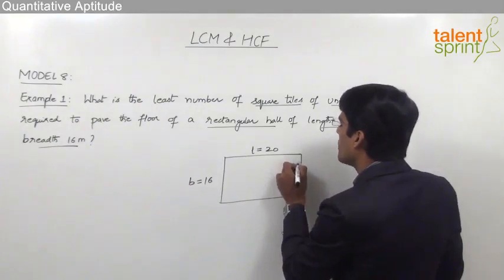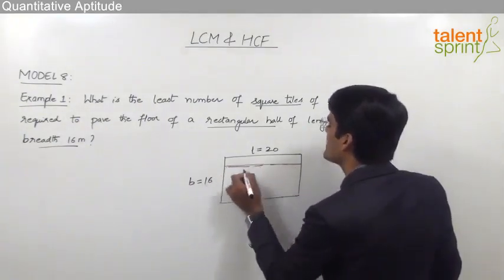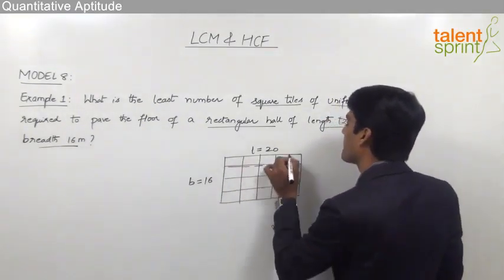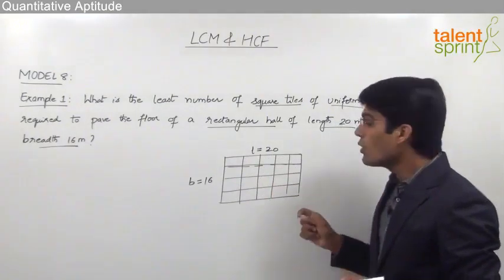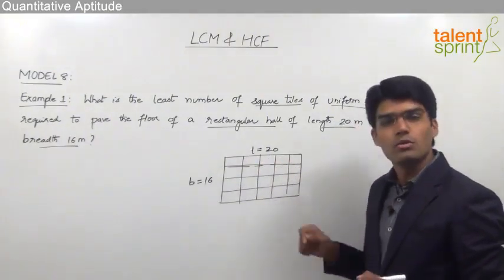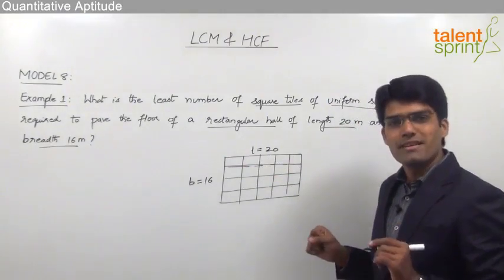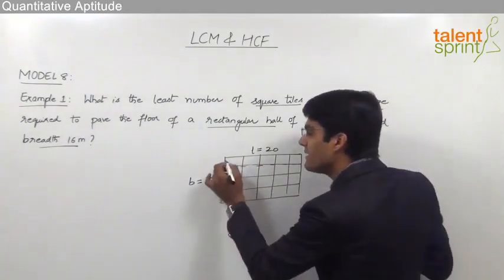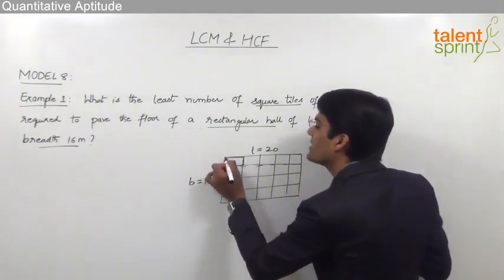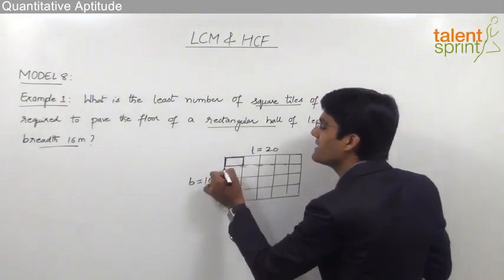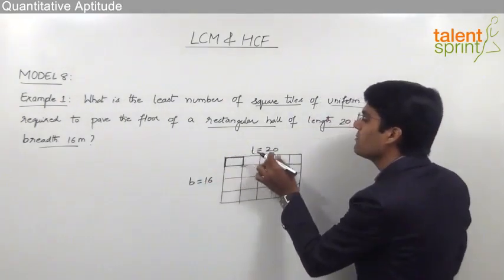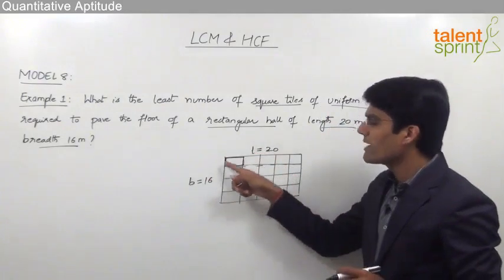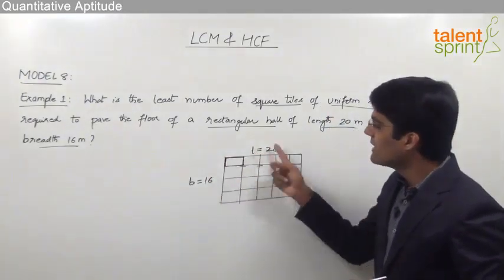When the flooring is done with square tiles, the side of the square tile should be a factor of both the length as well as the breadth — because it has to balance both dimensions in terms of its size. So one point which is clear here is the side of the square tile should be a factor of both length and breadth.